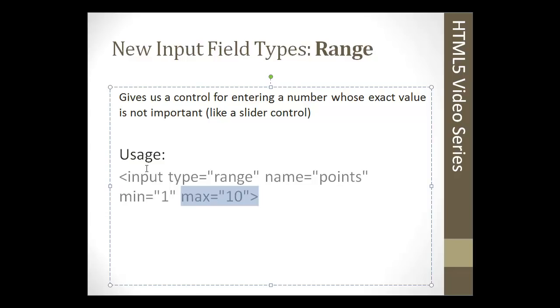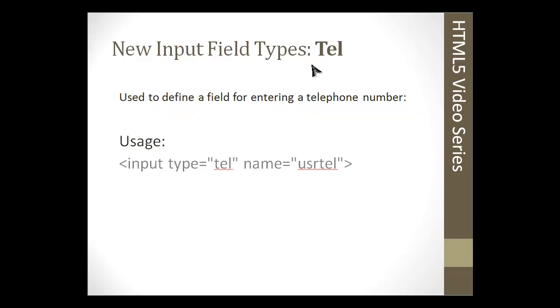Next we have the tel input, which is used for a telephone number. If the field isn't a valid telephone number, you'd get a pop-up saying that. Time is another one like date. You can select a time or enter a time. URL is used to define a field for entering a link. If it's not a link, it won't go through. You'll have a little message that pops up.